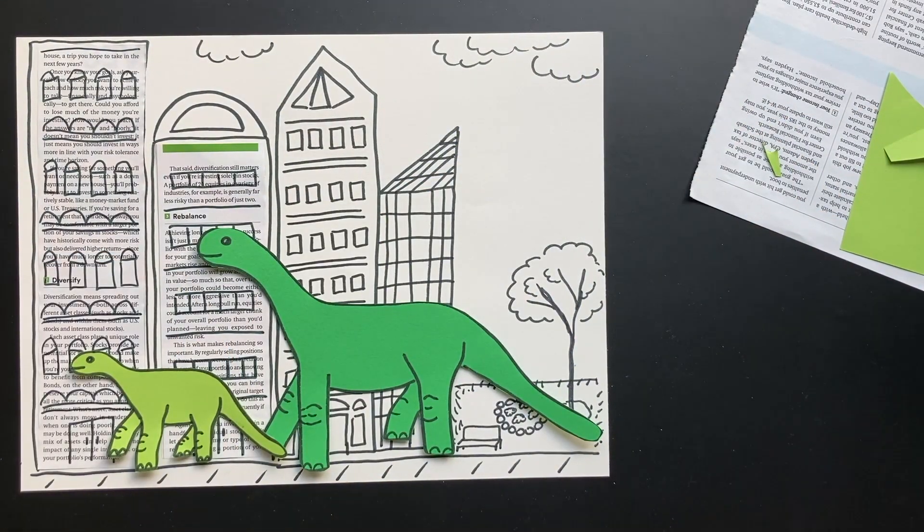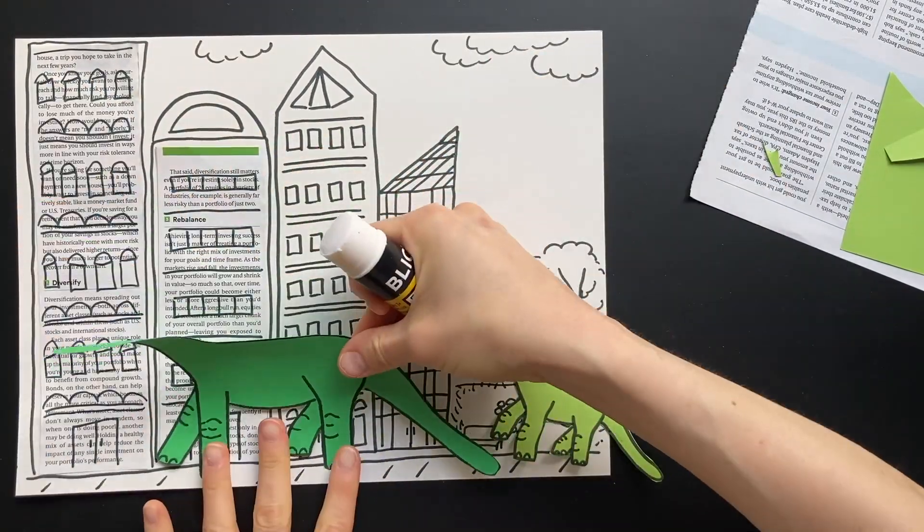When you have everything arranged, put some glue on the back of each piece of paper and stick them down.